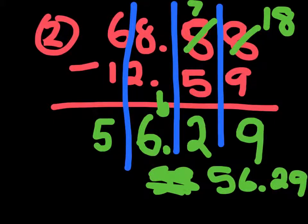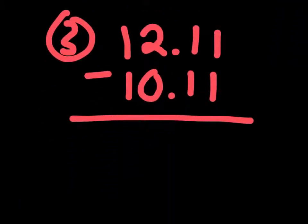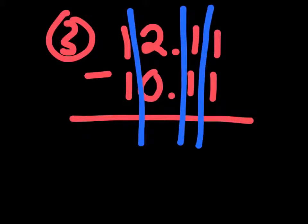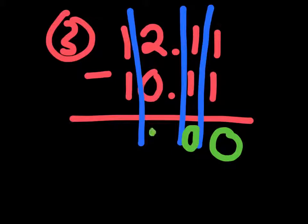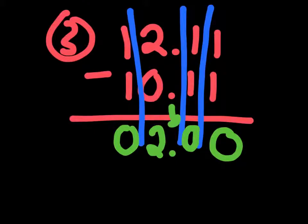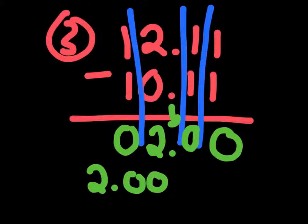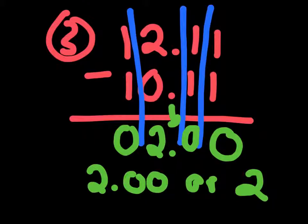Now let's go on to our last question. We have 12.11 minus 10.11. So let's break them up into columns and do our subtraction. 1 minus 1 is 0. 1 minus 1 is 0 again. 2 minus 0 is 2. And 1 minus 1 is 0. Then we bring down our decimal point, so our answer to 12.11 minus 10.11 is just 2.00, or just 2. And that's it for this video, guys. Thanks for watching and have an awesome day.